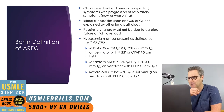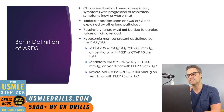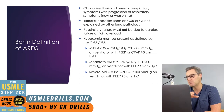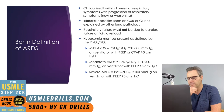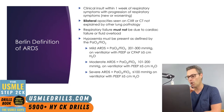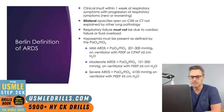Next, the patient must have bilateral opacities on their chest x-ray or CT, and this cannot be explained by another problem like pleural effusion or lung collapse. Next, the respiratory failure must not be due to heart failure or fluid overload, and you're going to confirm this with either a BNP or an echo.